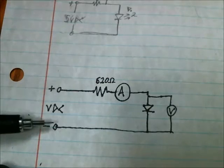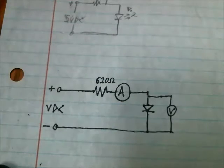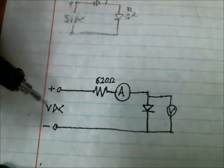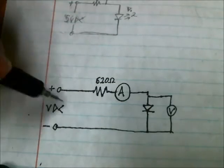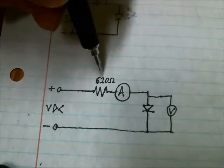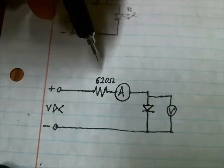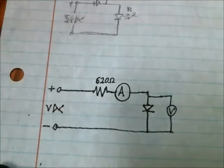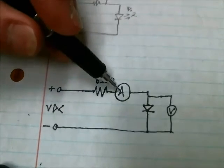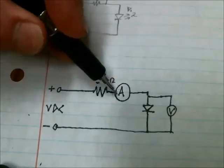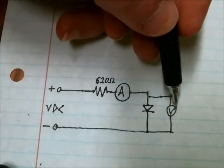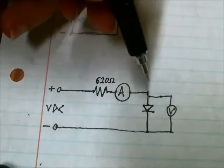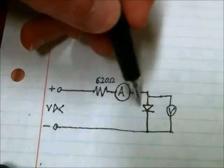Here's the test circuit I'm going to be using. There's a variable DC power supply, a fixed resistor which is 620 ohms of resistance, a current meter, a voltage meter, and then the LED.